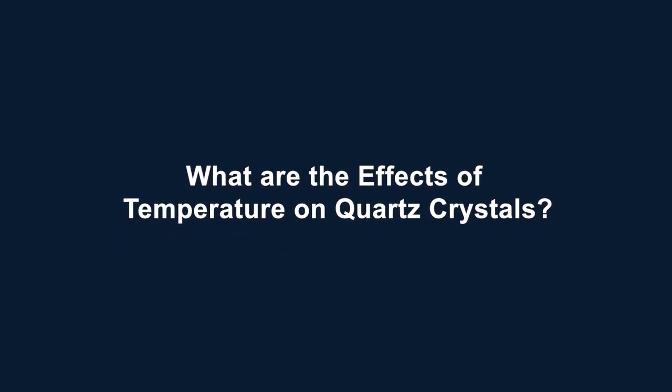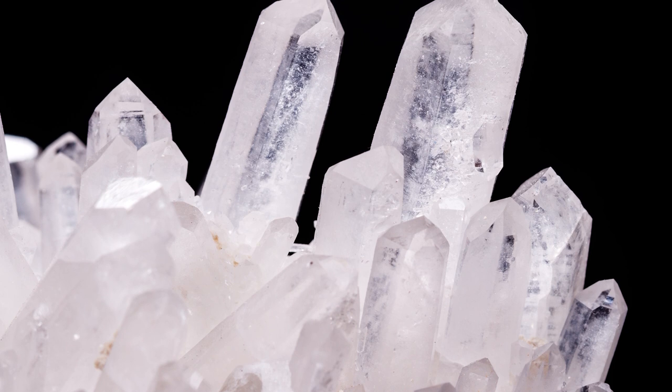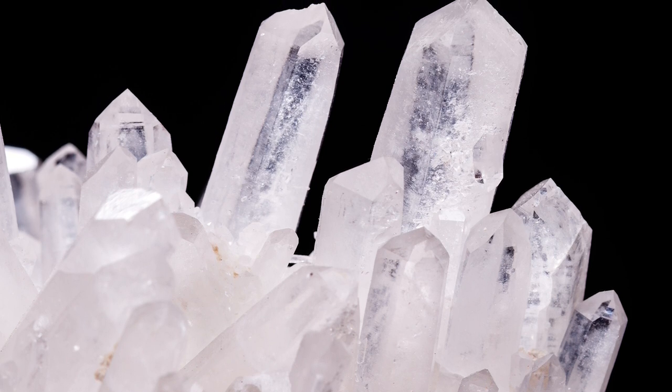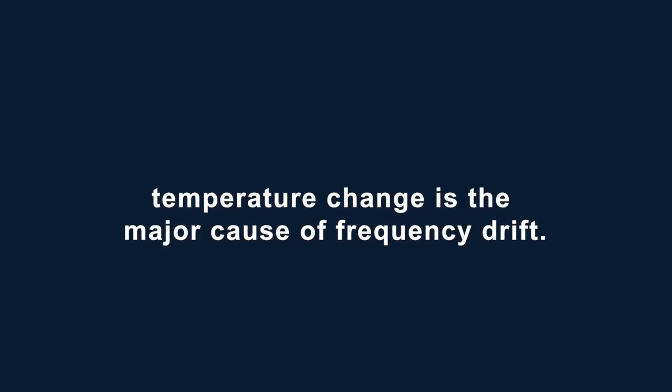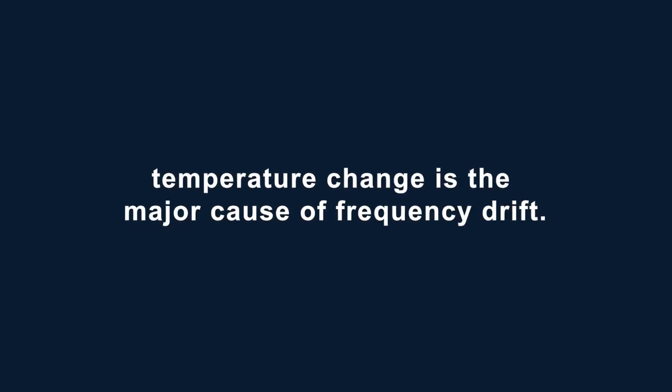What are the effects of temperature on quartz crystals? To answer this question we first need to understand the physical properties of quartz. Quartz is the second most abundant mineral in the earth's continental crust. Its crystal structure is a continuous framework of silicon oxygen tetrahedra. The uniform structure makes it possible for it to be formed into specific geometries that allow it to resonate at very specific frequencies. Although quartz has a very low coefficient of thermal expansion, temperature change is the major cause of frequency drift. The change in frequency comes as the temperature variations change the value of the elastic constant and to a lesser degree the dimensions of the resonator.